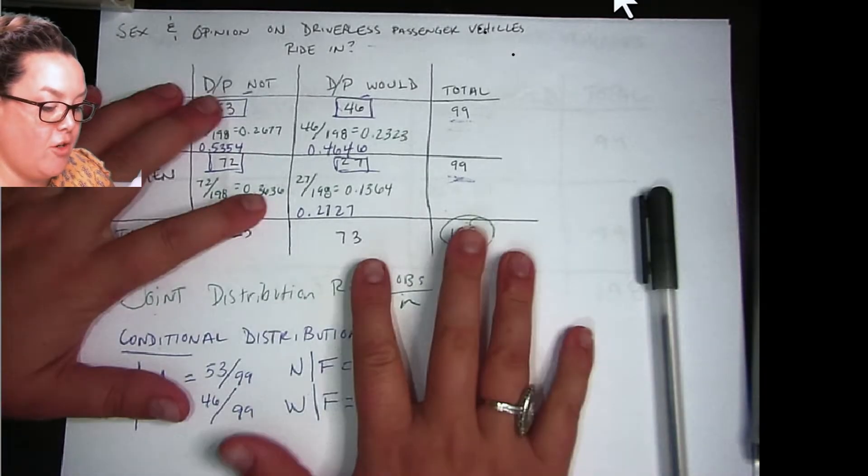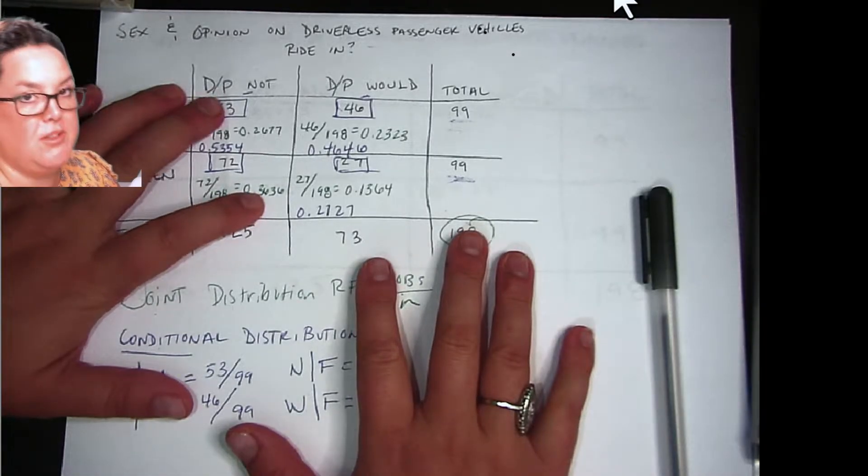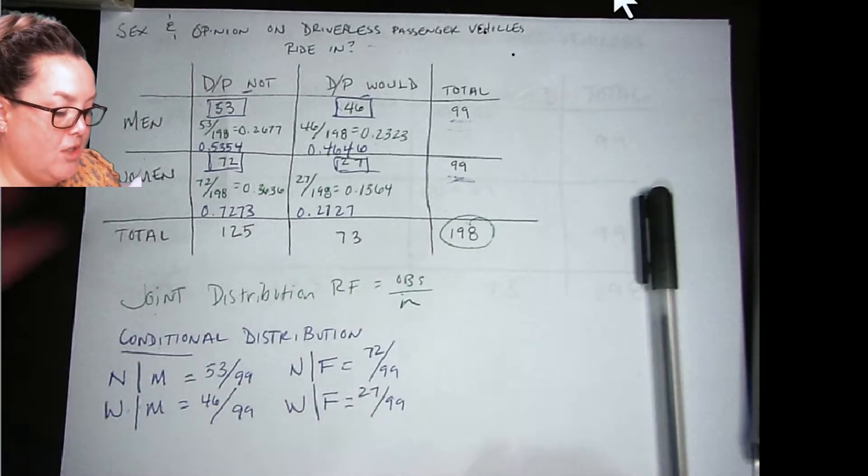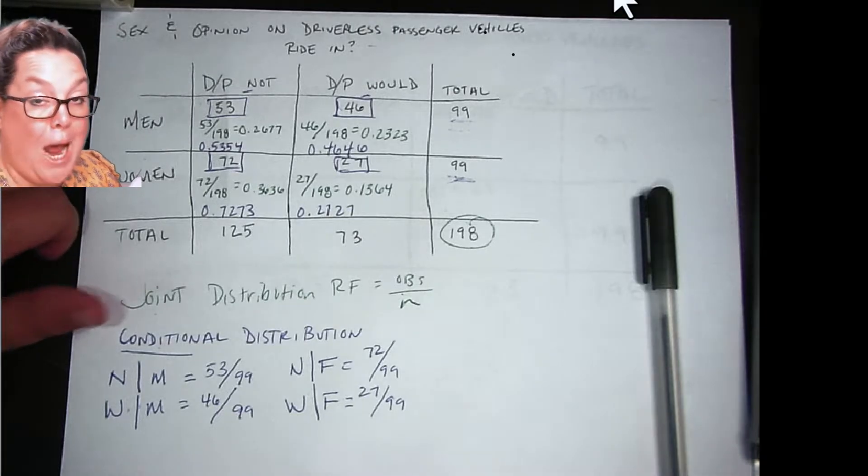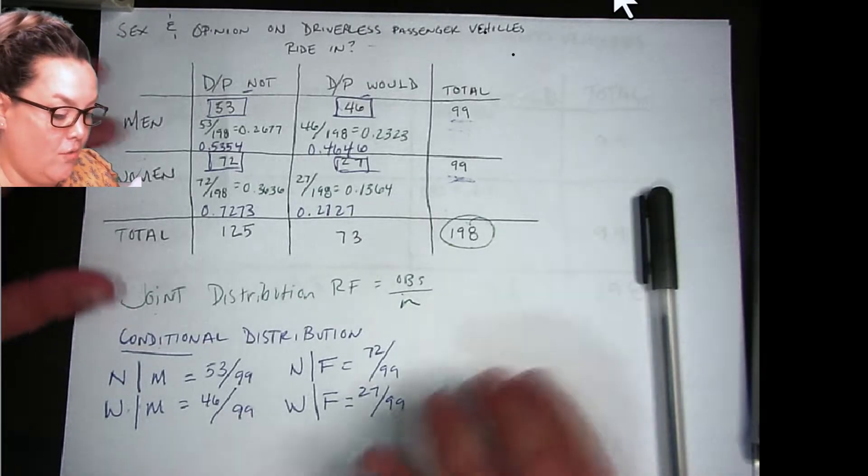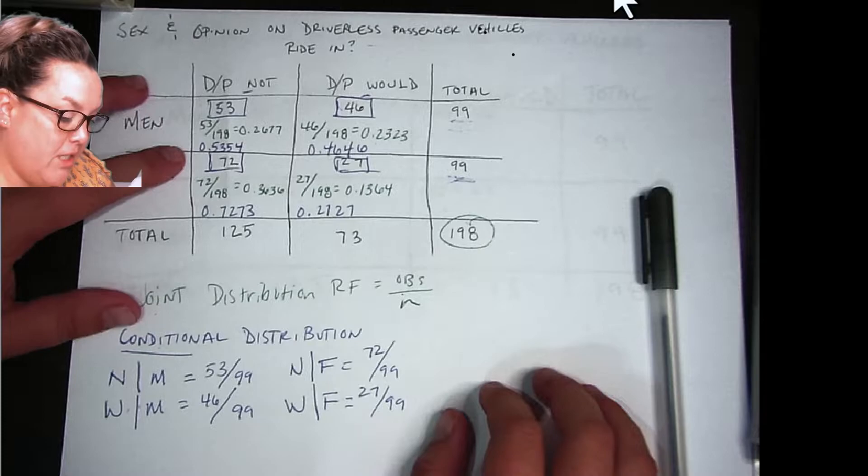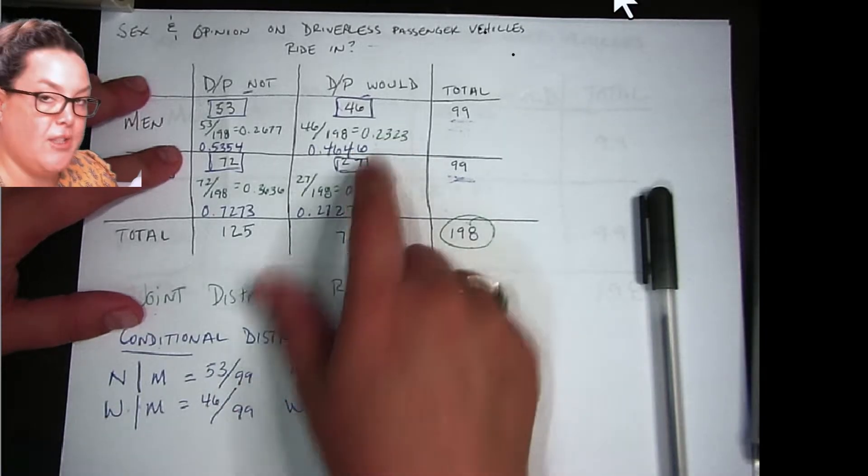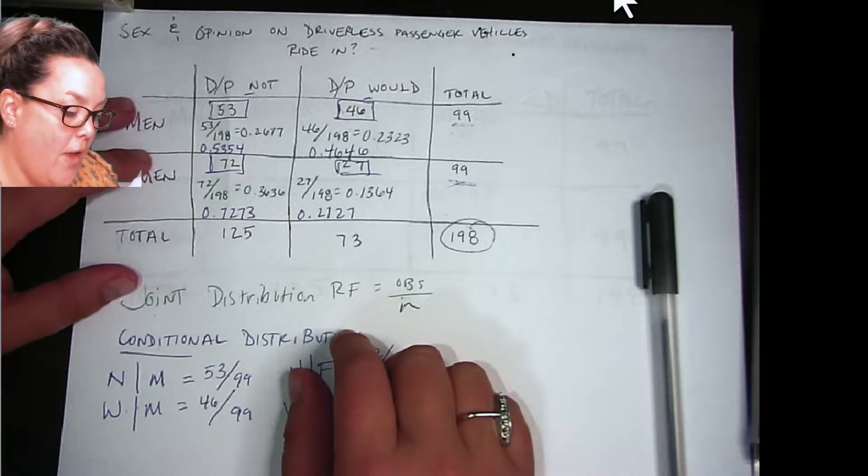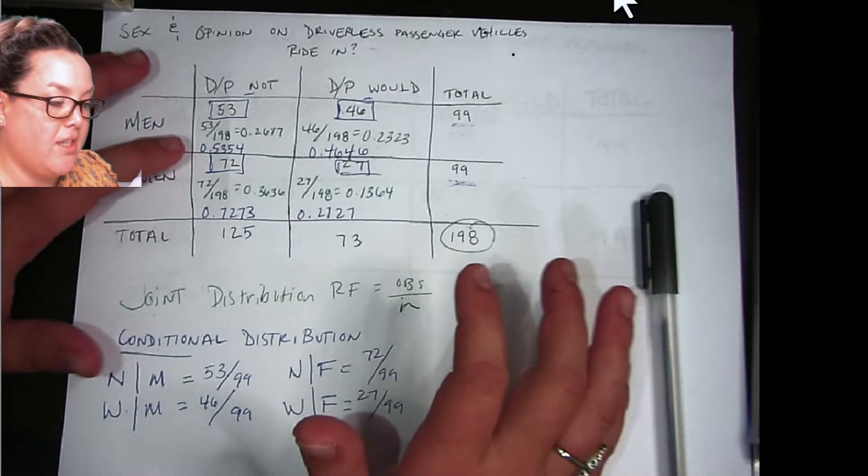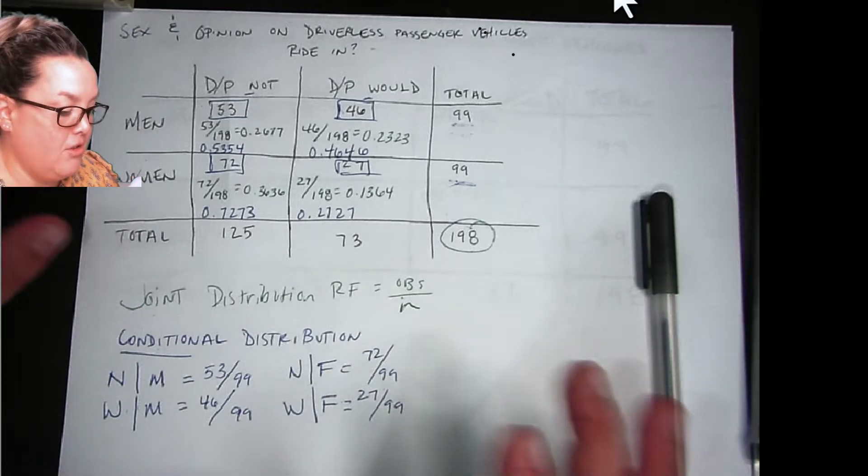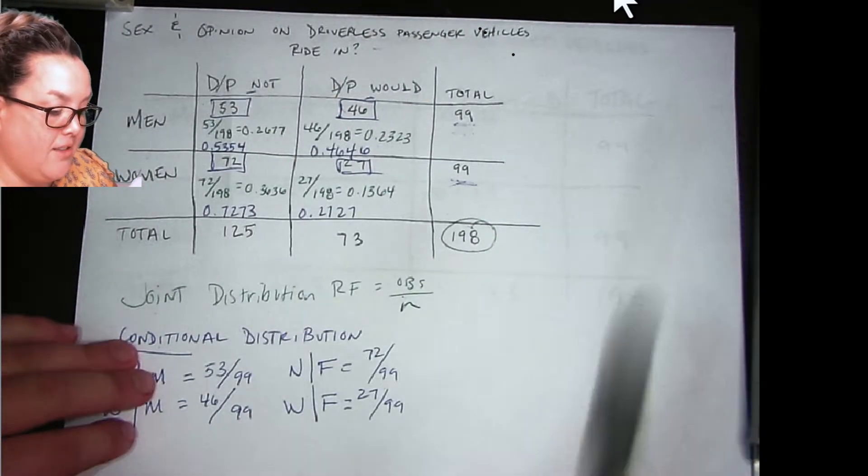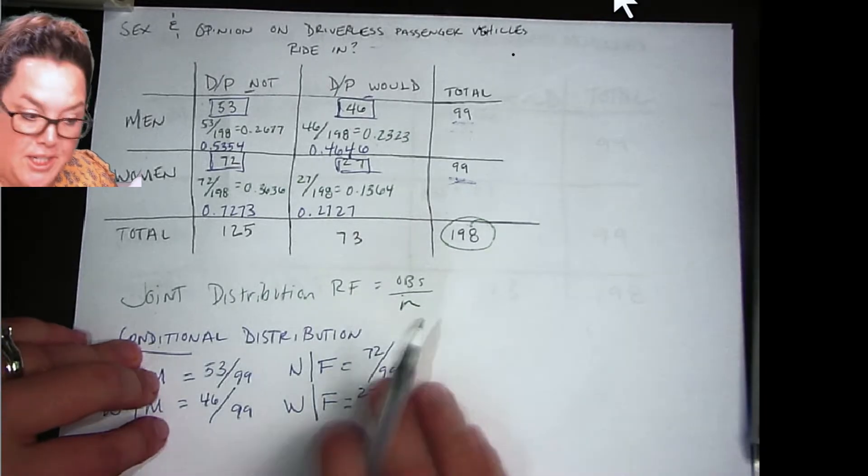When we first were looking at contingency tables, if you remember from a few units back, we talked about this example, which is sex and opinion of riding in a driverless passenger vehicle. I said to you when we did it that the conditional distribution has a big difference in the percentages that are there. And so because of that, I expect that we're going to see an association between sex and opinion on riding in a driverless passenger vehicle. So we're going to test that today.